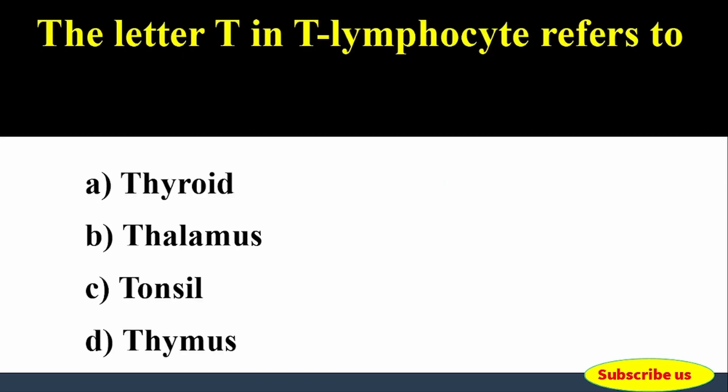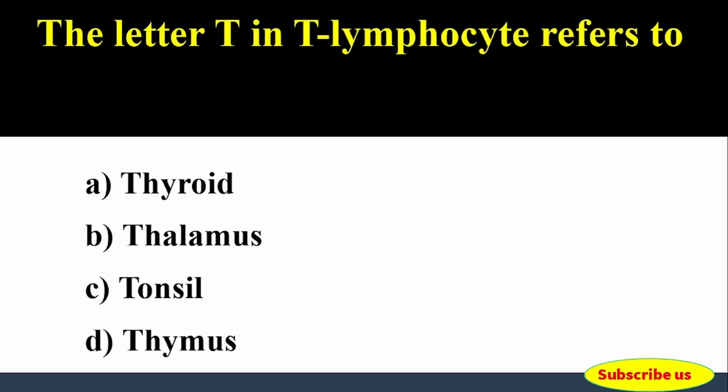Next question: The letter 'T' in T lymphocyte refers to — Options: A) Thyroid, B) Thalamus, C) Tonsil, D) Thymus. Answer: Option D, Thymus. The letter T in T lymphocyte refers to the thymus.